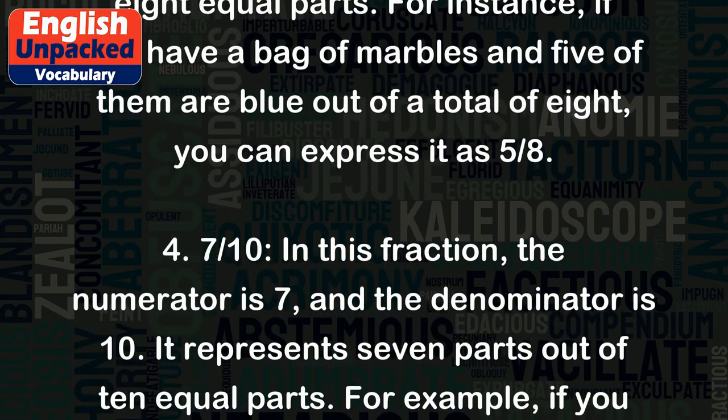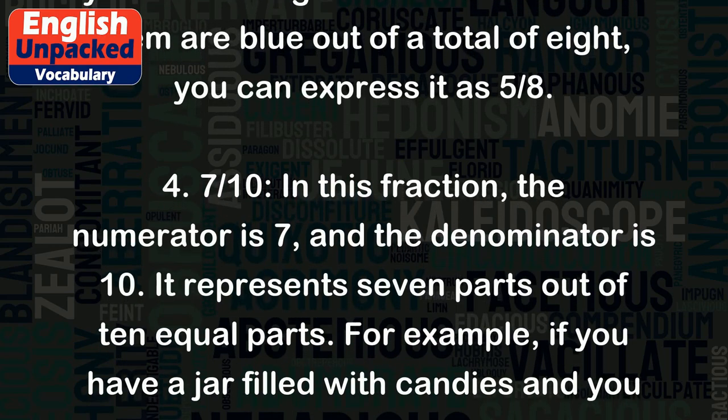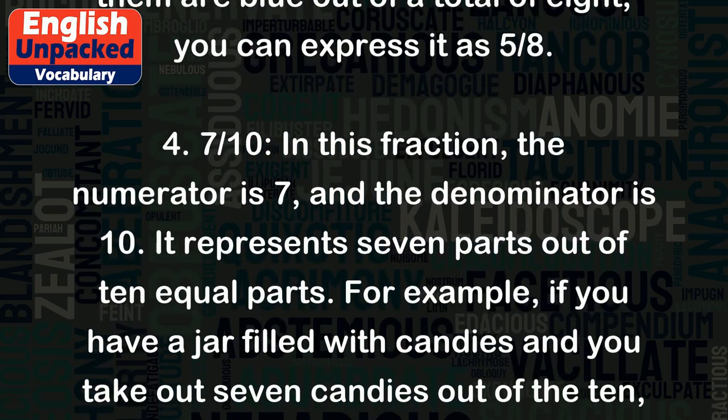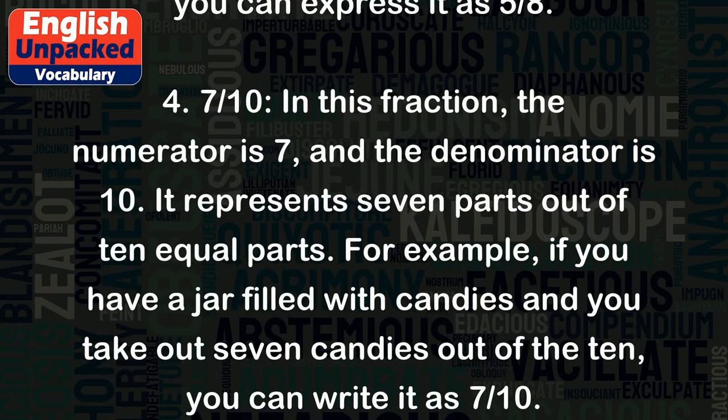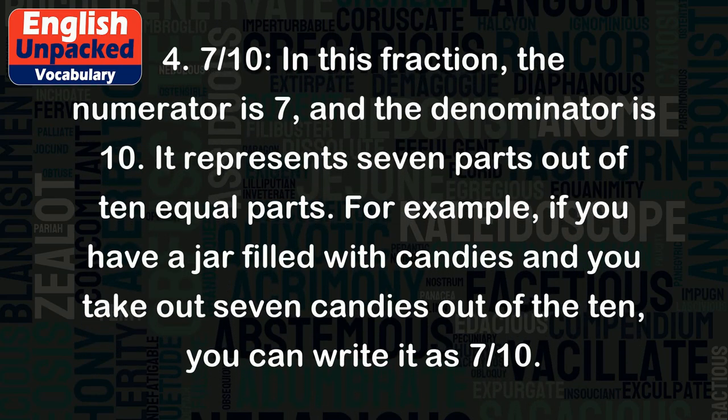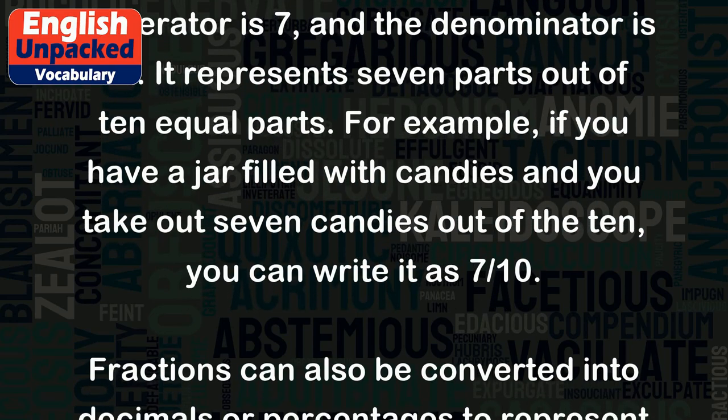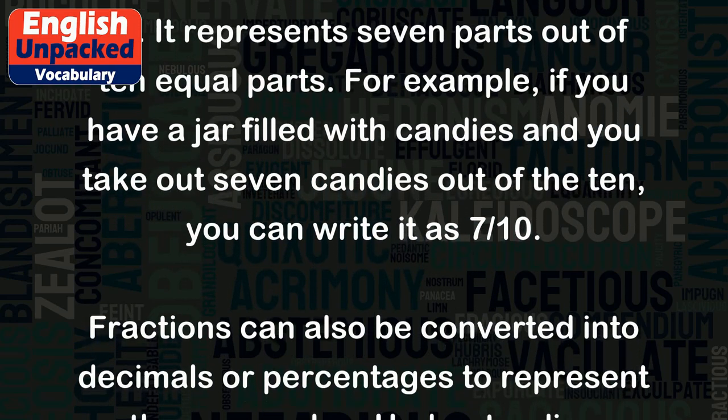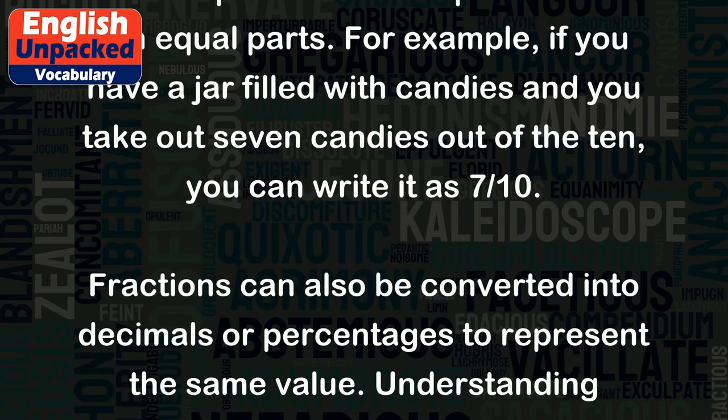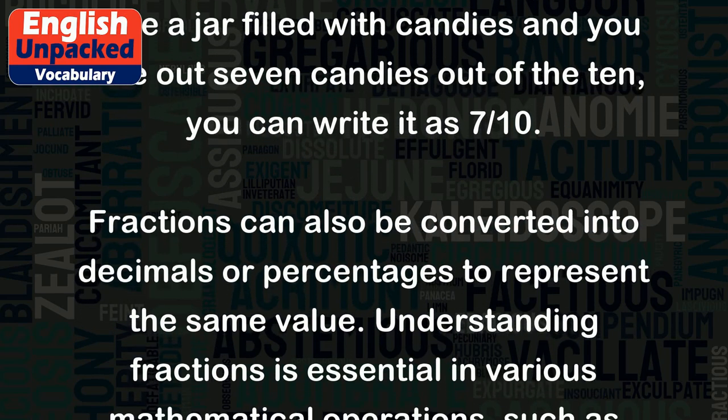4. Seven tenths. In this fraction, the numerator is 7 and the denominator is 10. It represents 7 parts out of 10 equal parts. For example, if you have a jar filled with candies and you take out 7 candies out of the 10, you can write it as 7 tenths.